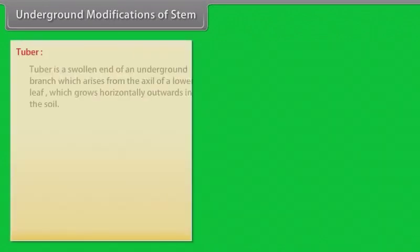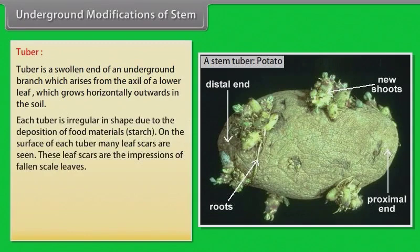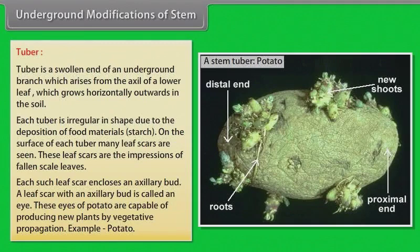Tuber is a swollen end of an underground branch which arises from the axil of a lower leaf, which grows horizontally outwards in the soil. Each tuber is irregular in shape due to the deposition of food materials — starch. On the surface of each tuber, many leaf scars are seen, which are the impressions of fallen scale leaves. Each such leaf scar encloses an axillary bud; a leaf scar with an axillary bud is called an eye.